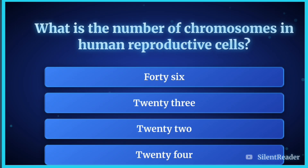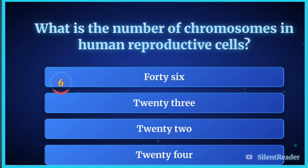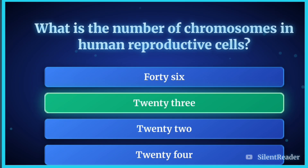What is the number of chromosomes in human reproductive cells? The correct answer is 23.